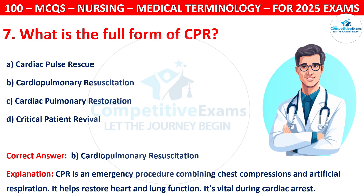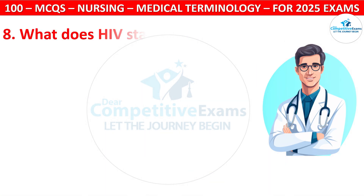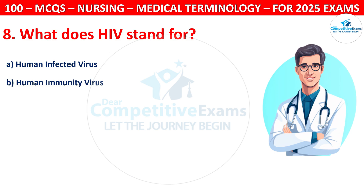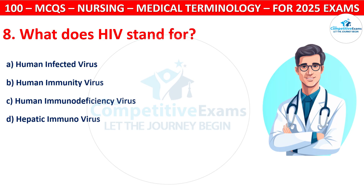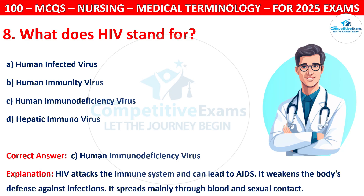Question 8: What does HIV stand for? Options are: Human Infected Virus, Human Immunity Virus, Human Immunodeficiency Virus, or Hepatic Immunovirus. The correct answer is C, that is Human Immunodeficiency Virus. HIV attacks the immune system and can lead to AIDS. It weakens the body's defense against infections. It spreads mainly through blood and sexual contact.